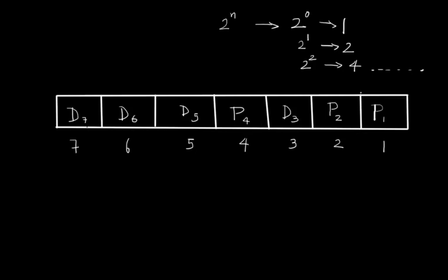So when all these things are completed, we find out the parity bits for the corresponding data bits. Then our data is said to be encoded in Hamming code.